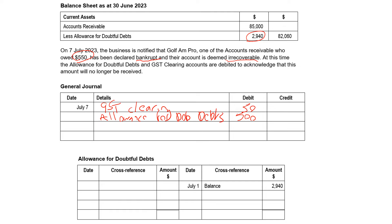So our credit entry is accounts receivable — again, don't abbreviate like I am — for $550. Therefore, on the 7th of July we also do a debit entry in our negative asset account: debit allowance for doubtful debts $500, and credit accounts receivable $500. Again, don't abbreviate on the exam.